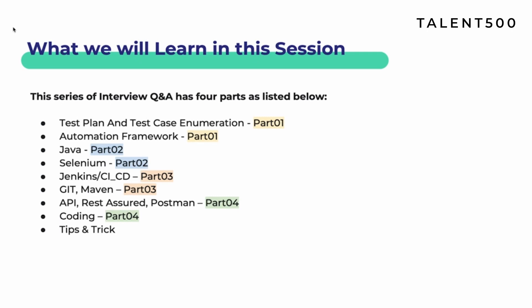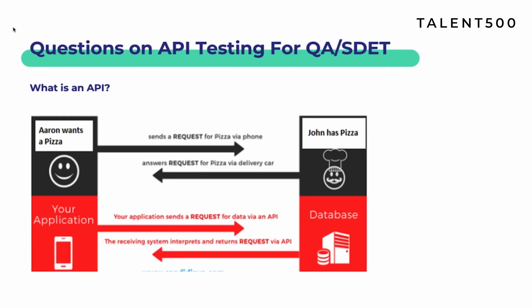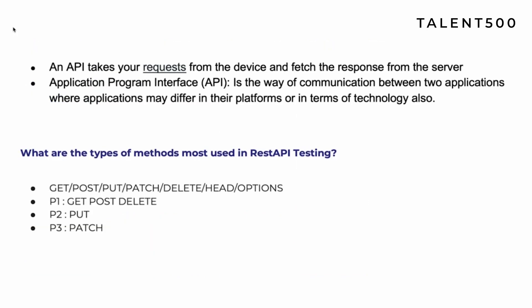Let's start with our first question: what is an API? This is a very basic and fundamental question. Whenever you answer this question, I would suggest giving a real-time example — only a theoretical answer may not help you give a satisfactory explanation. So it is better to provide an example, and I will also explain with an example.